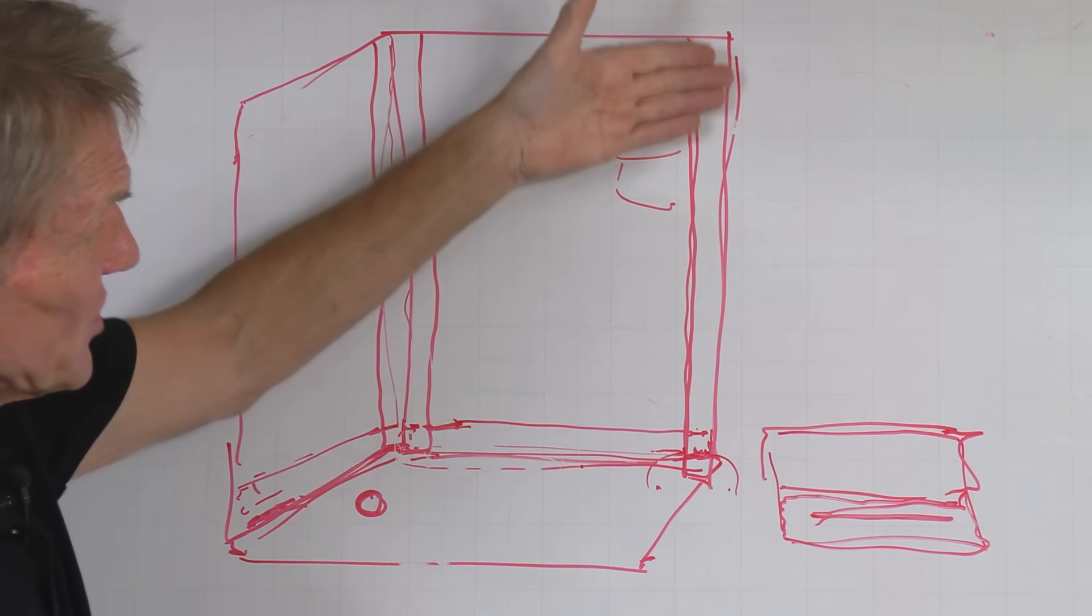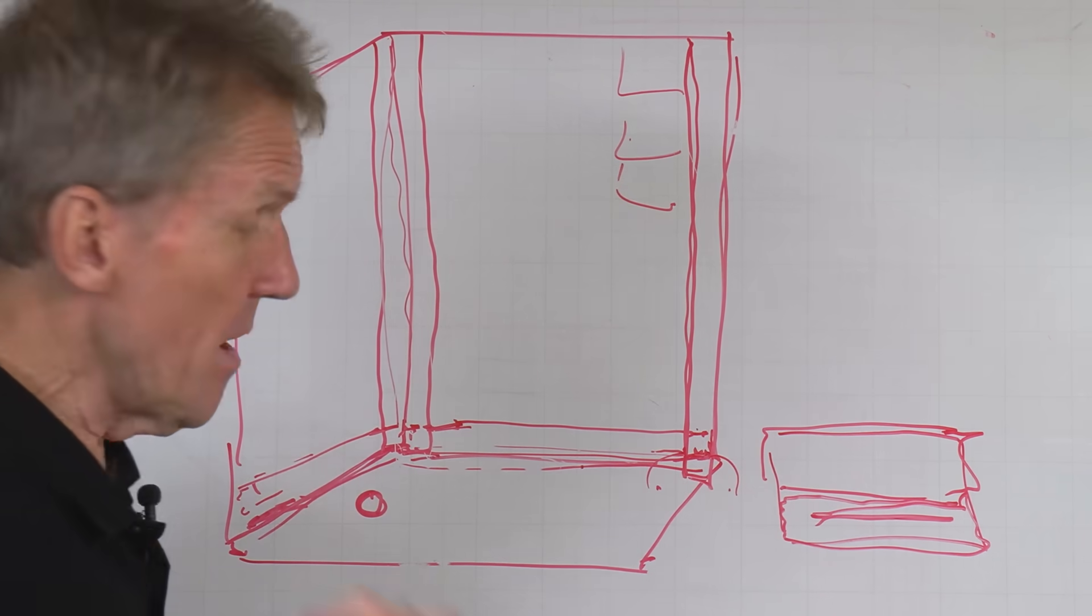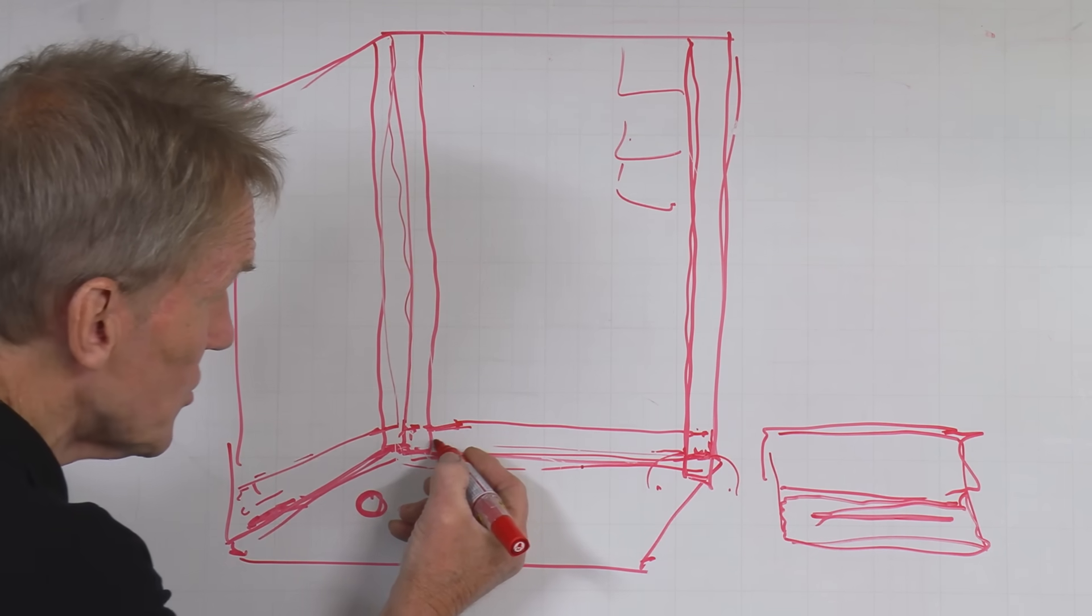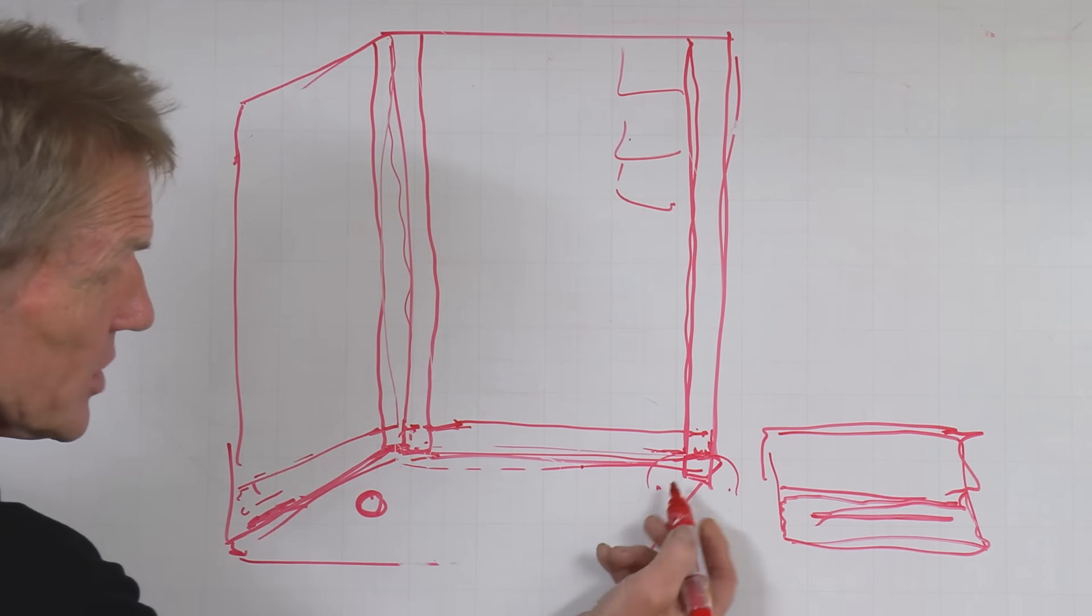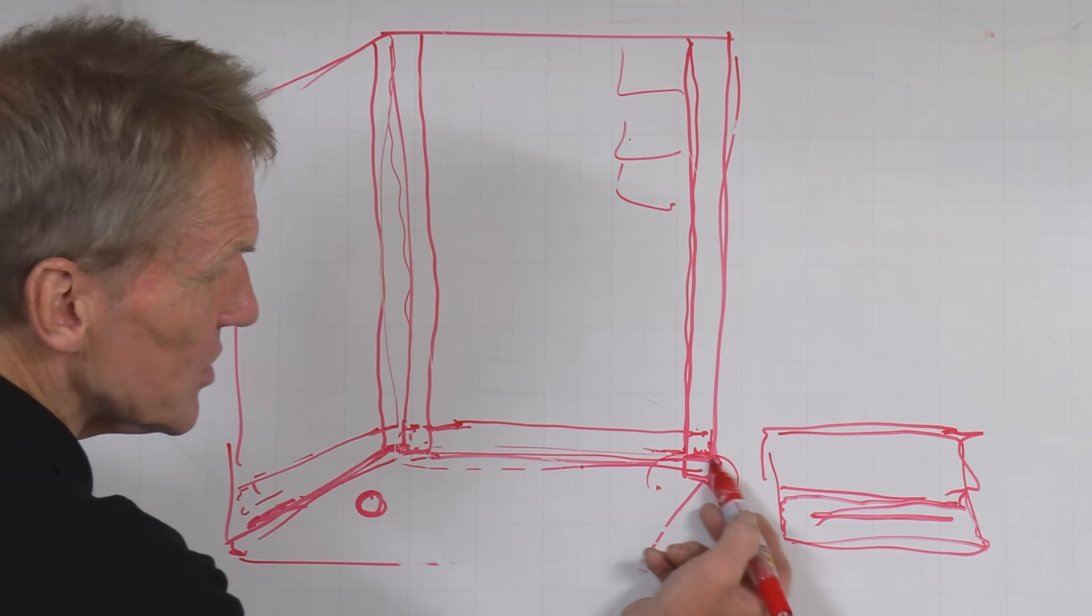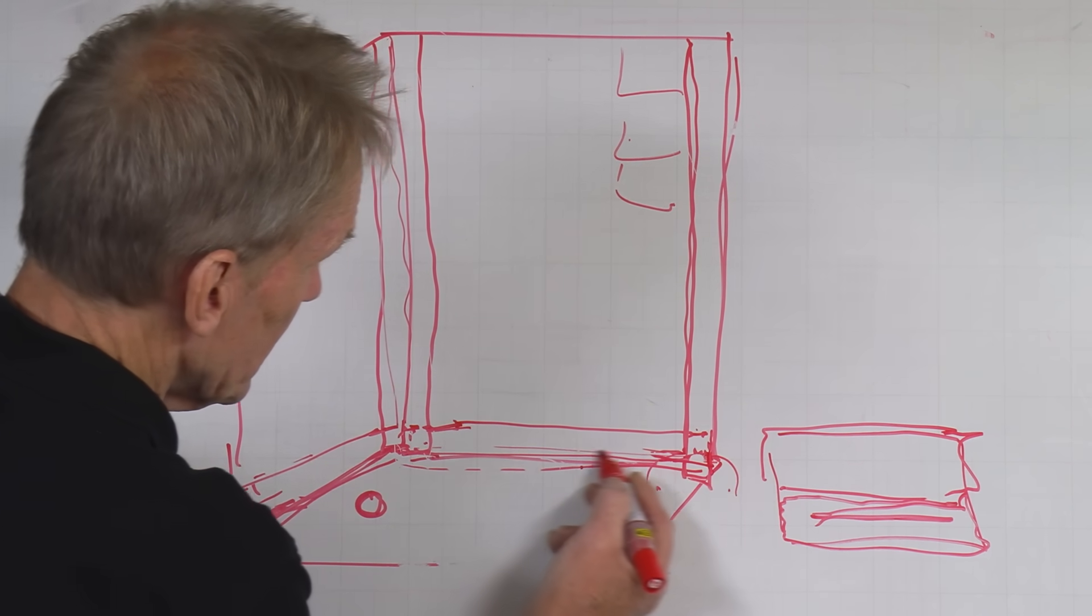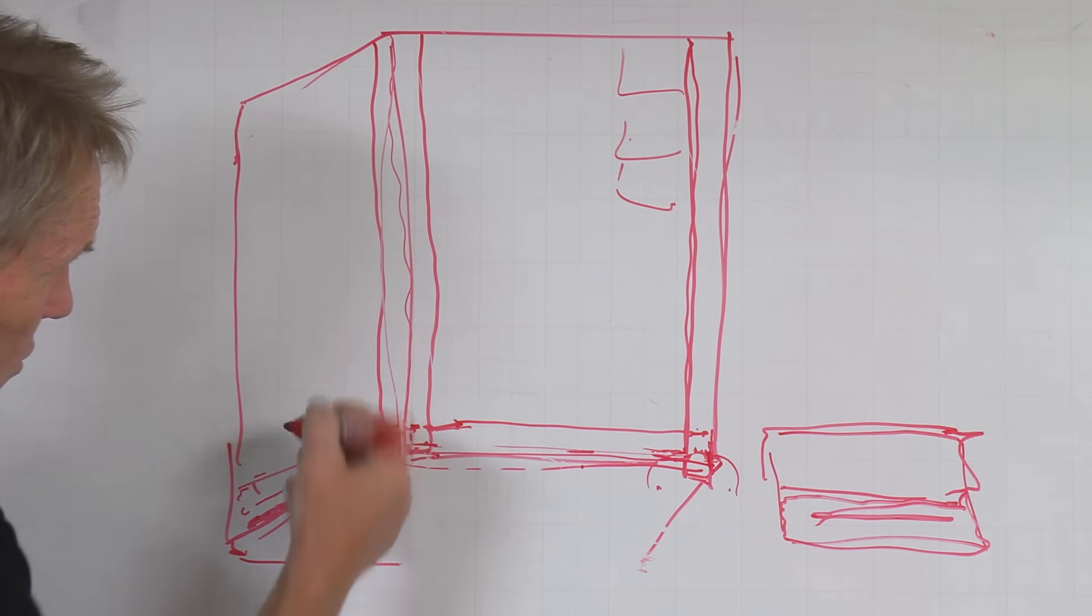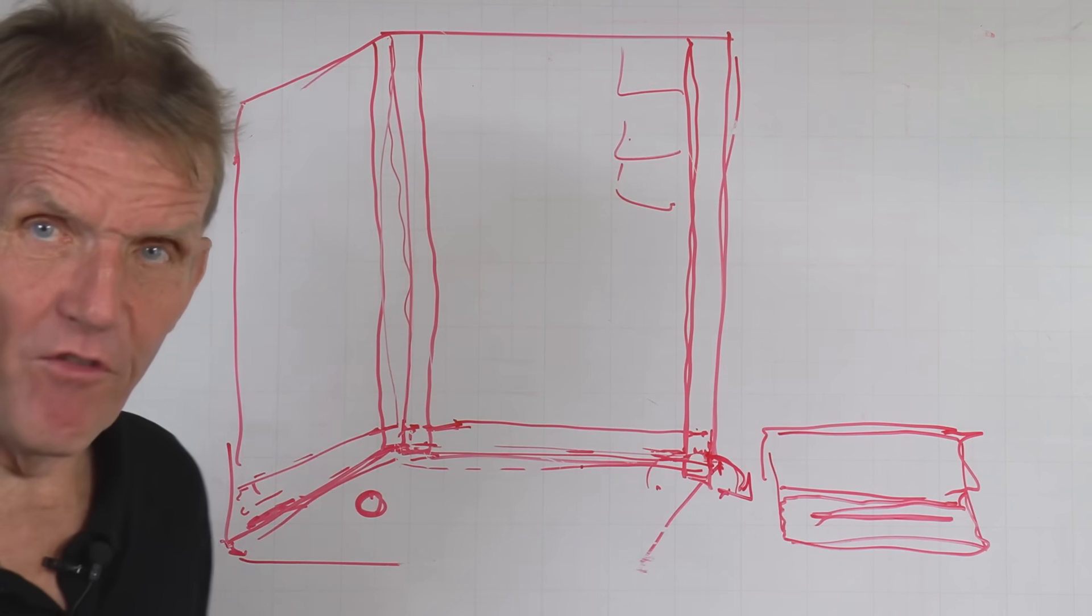Once we've done that, we've tiled our wall all the way around. We then apply our silicone seal joint all the way along the bottom and we make sure that that silicone seal joint runs behind that shower profile. The shower profile is there, the silicone is running all the way around there. Any water that gets around there can only get out in the end onto the floor.